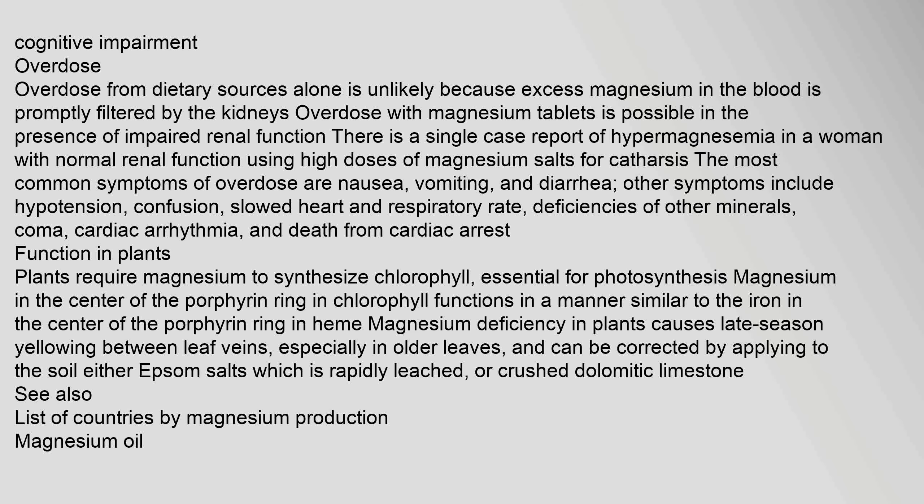Plants require magnesium to synthesize chlorophyll, essential for photosynthesis. Magnesium in the center of the porphyrin ring in chlorophyll functions in a manner similar to the iron in the center of the porphyrin ring in heme. Magnesium deficiency in plants causes late-season yellowing between leaf veins, especially in older leaves, and can be corrected by applying to the soil either Epsom salts (which is rapidly leached) or crushed dolomitic limestone.